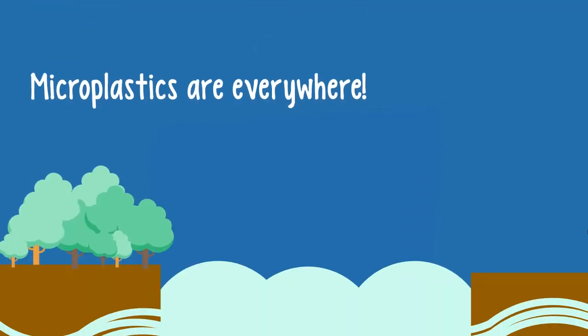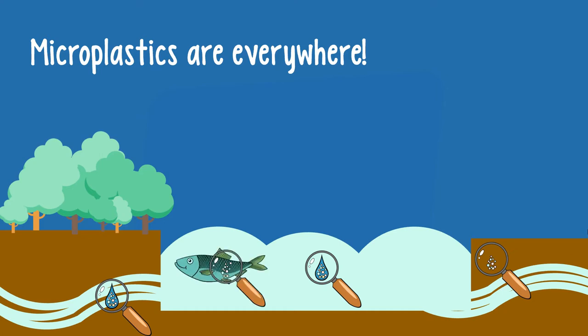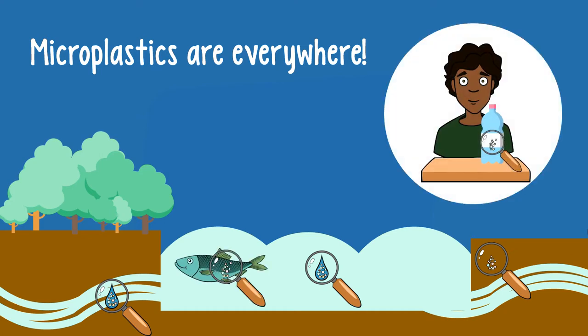Microplastics are found nearly everywhere in the environment. They have been detected in seawater, freshwater and sediments. Not surprisingly, they have also entered the food chain. They have, for example, been found in shellfish, fish and bottled drinking water. Consequently, microplastics have been detected in humans as well.